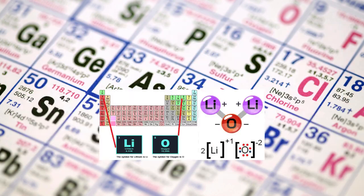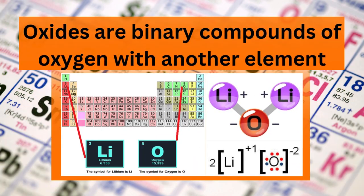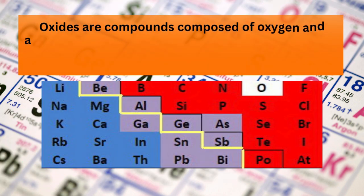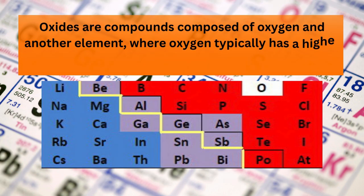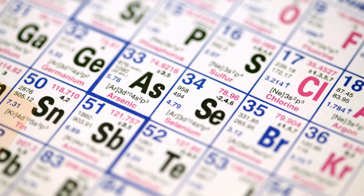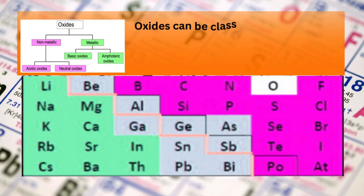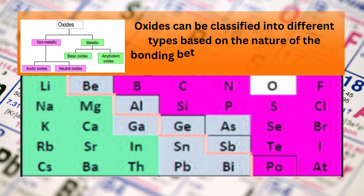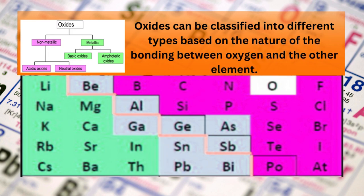Oxides are binary compounds of oxygen with another element, composed of oxygen and another element where oxygen typically has a higher electronegativity. Oxides can be classified into different types based on the nature of the bonding between oxygen and the other element.